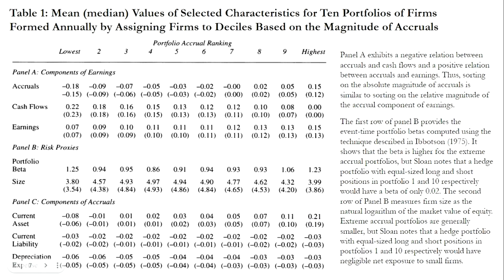Table 1 shows mean and median values of selected characteristics for 10 portfolios of firms formed annually by assigning firms to deciles based on the magnitude of accruals. Panel A exhibits a negative relation between accruals and cash flows and a positive relation between accruals and earnings. Panel B's first row shows that beta is higher for the extreme accrual portfolios, but a hedge portfolio with equal-size long and short positions in portfolios 1 and 10 would have a beta of only 0.02. The second row shows that extreme accrual portfolios are generally smaller, but such a hedge portfolio would have negligible net exposure to small firms.